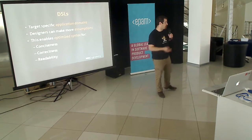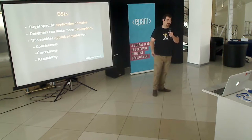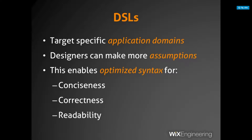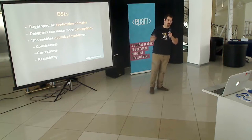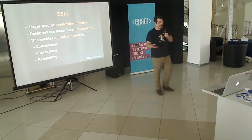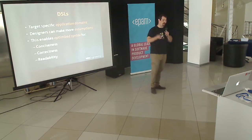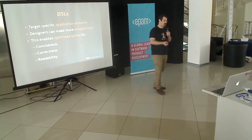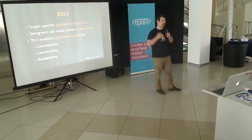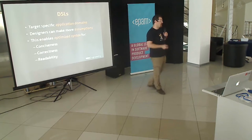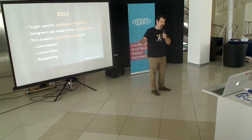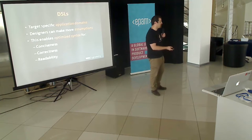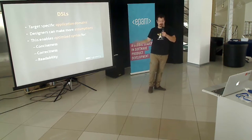A DSL stands for a domain-specific language. As the name implies, it is a language designed to deal with a specific application domain. Once you have a very specific application domain, you can design the language to match that domain and make more assumptions. If you're writing a DSL that deals with building JSON objects, that is what your users want to do, so you don't have to worry about anything else.